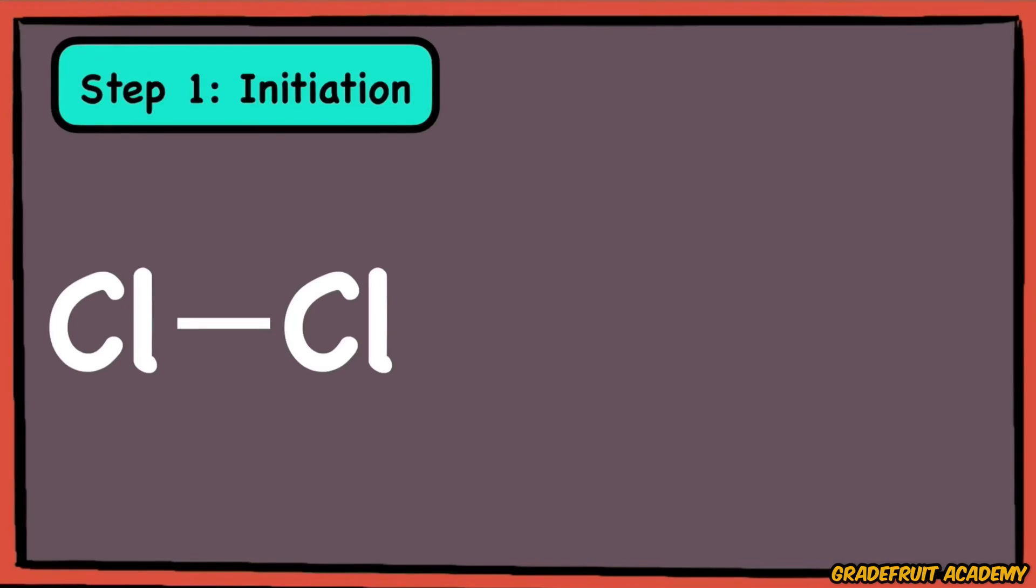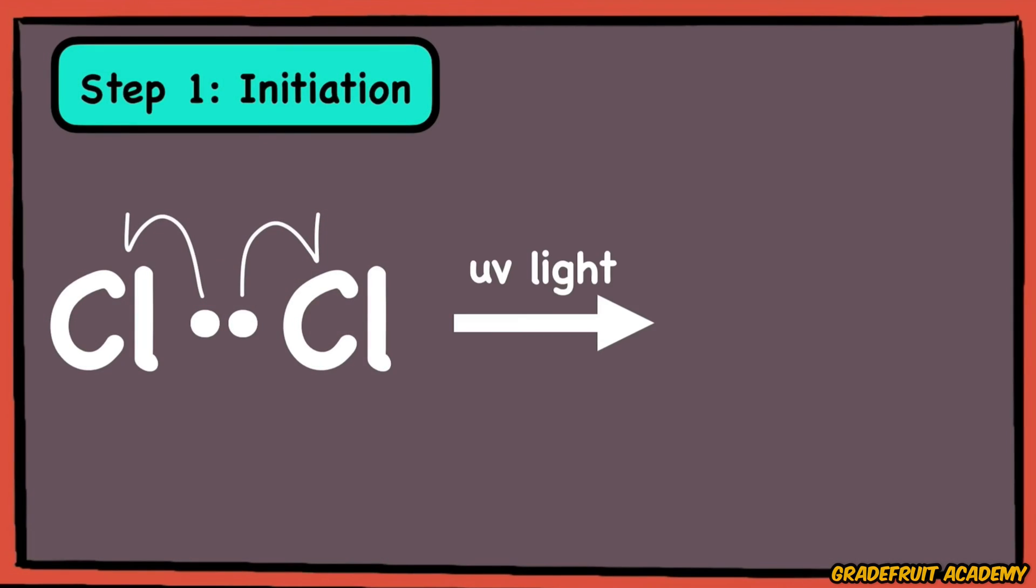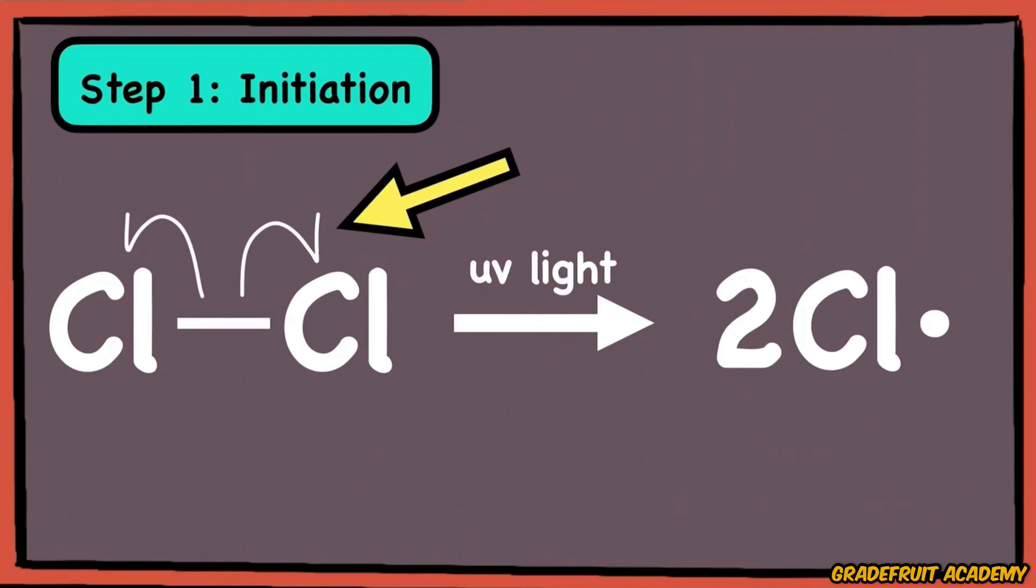As the covalent bond consists of two electrons, homolytic fission will cause each shared electron in the bond to be split mutually between the two chlorine atoms, forming two chlorine radicals and we use half arrows to represent the movement of these single unpaired electrons.